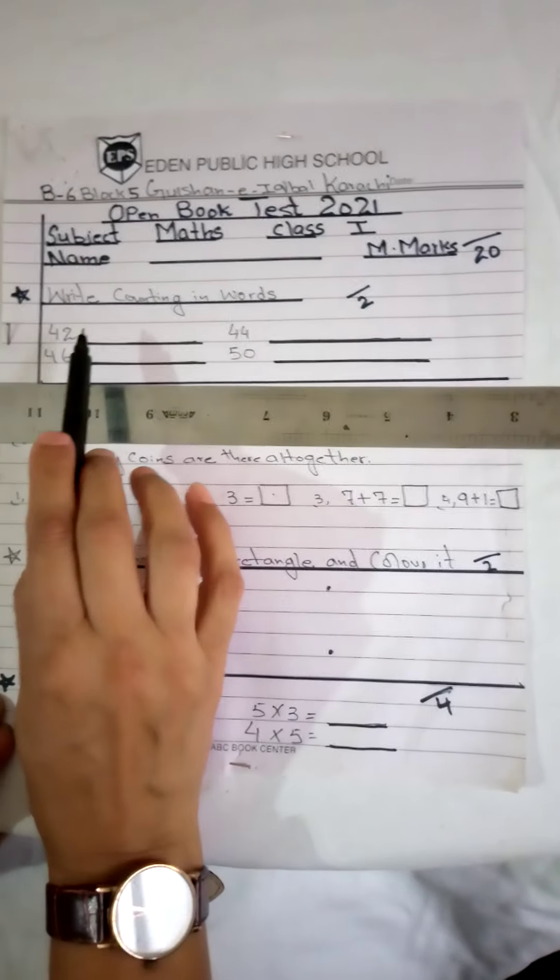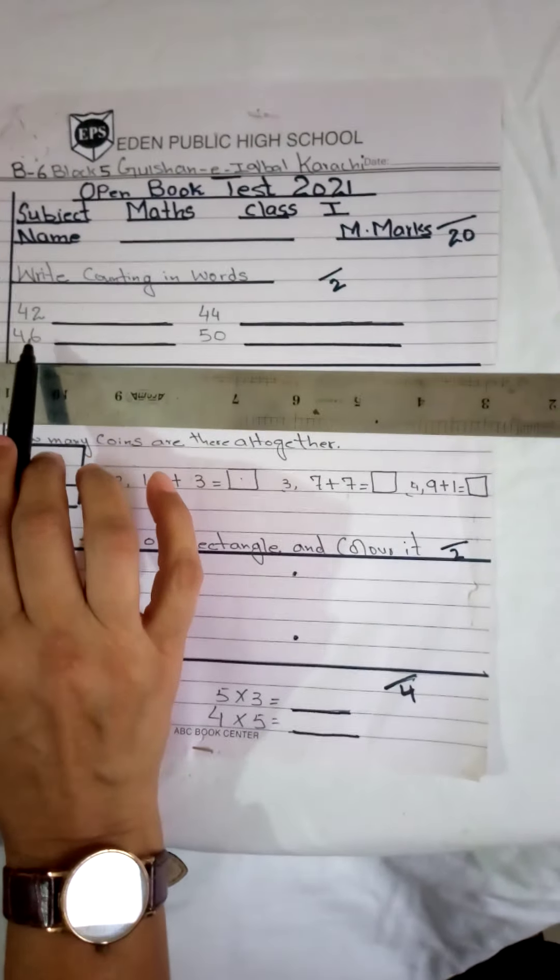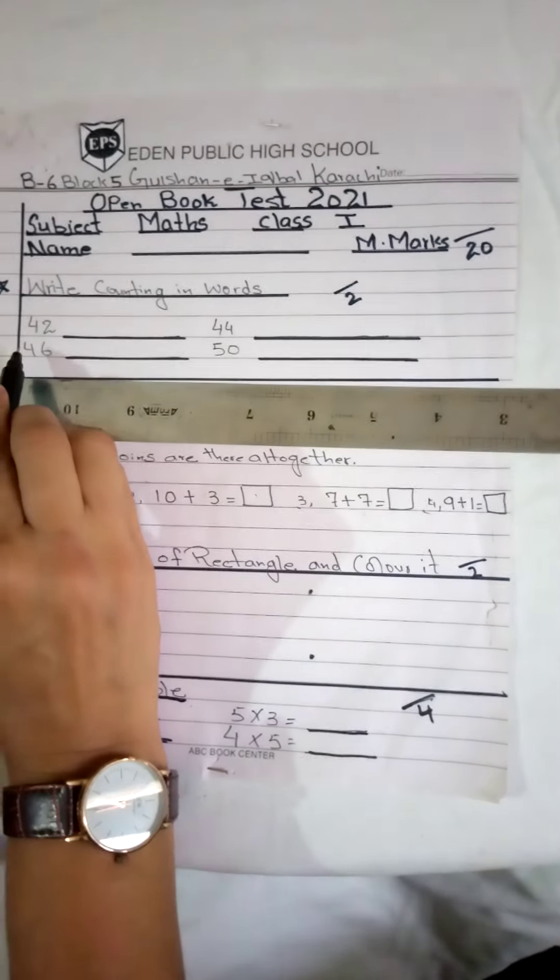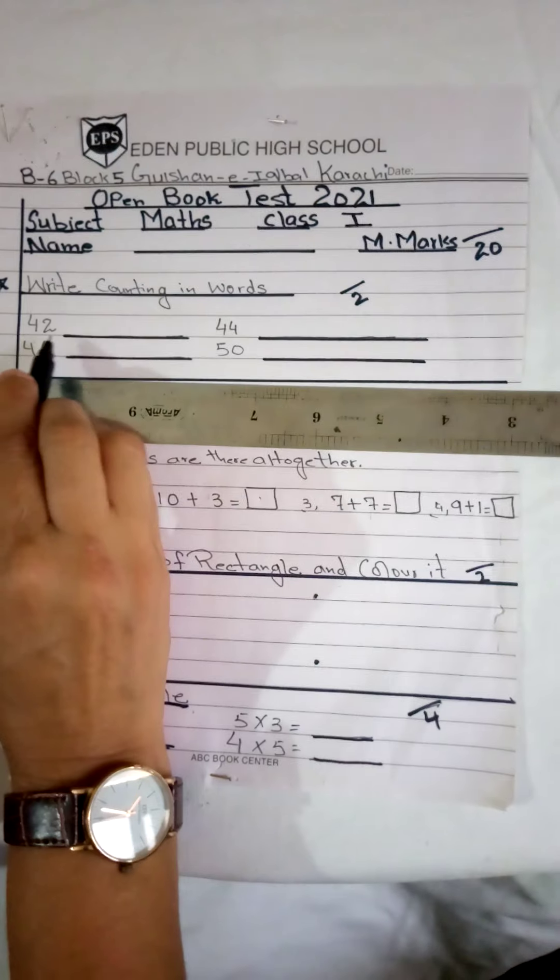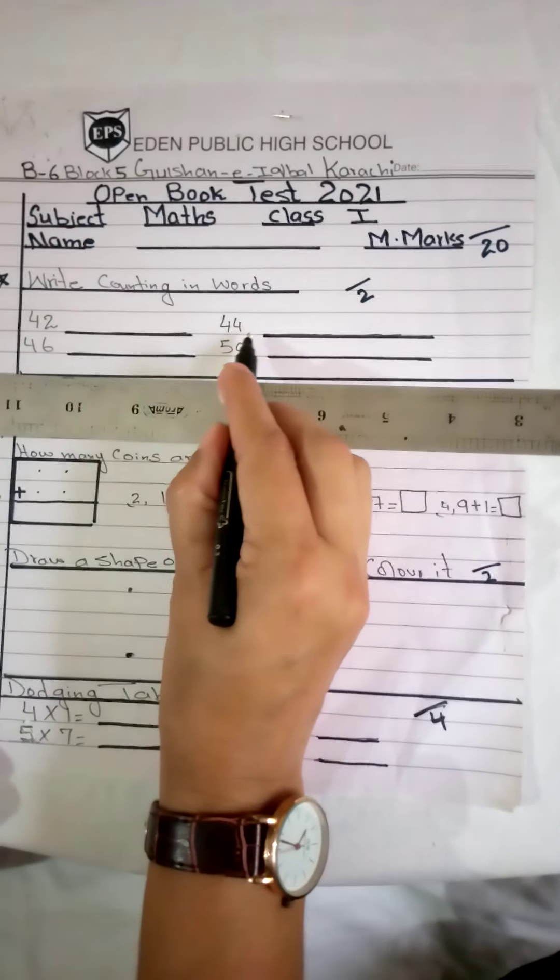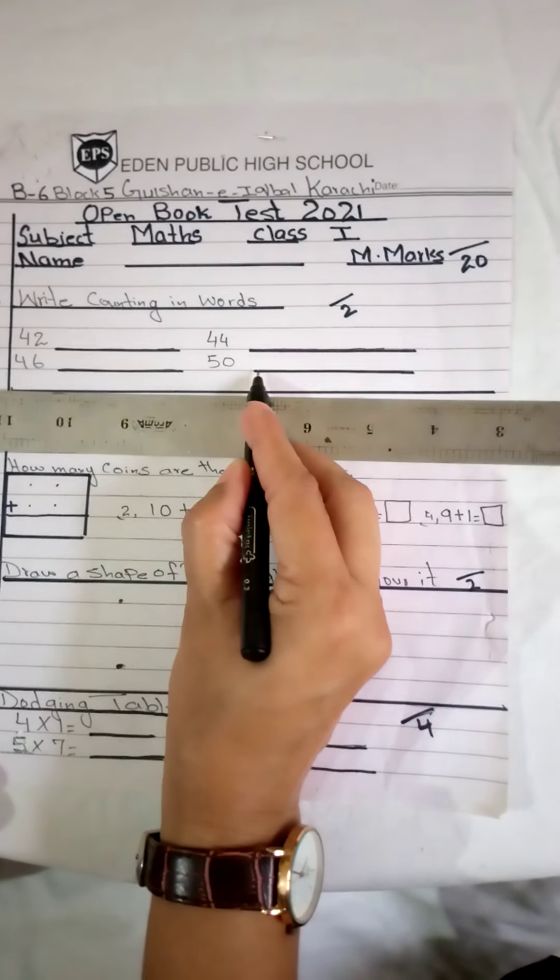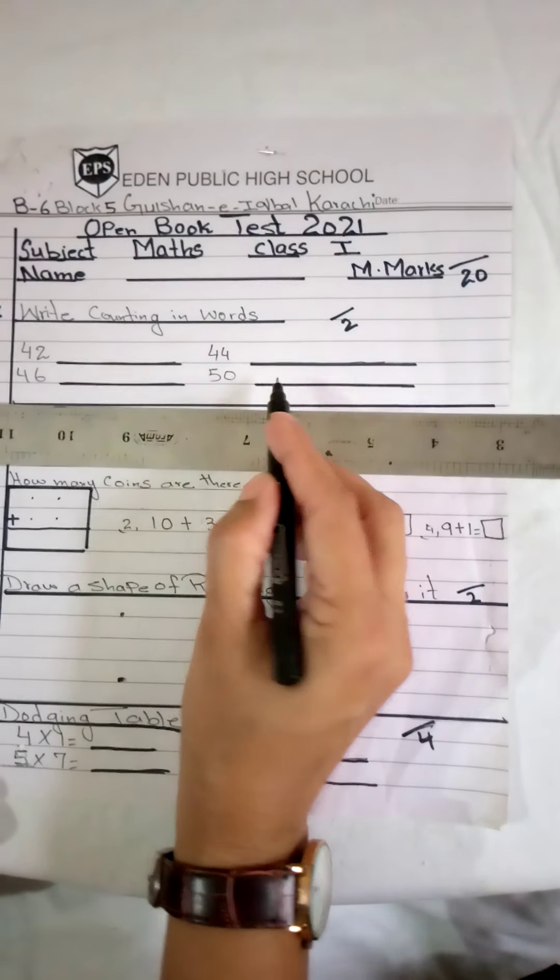Now I will tell you. First, your first work is to write counting in words. You have to write counting, which the teacher has given the number, you have to write it in spelling. Number one: 42. You will mention the spelling here. Then 44, 46, 50. Okay, you have to write the spelling here.